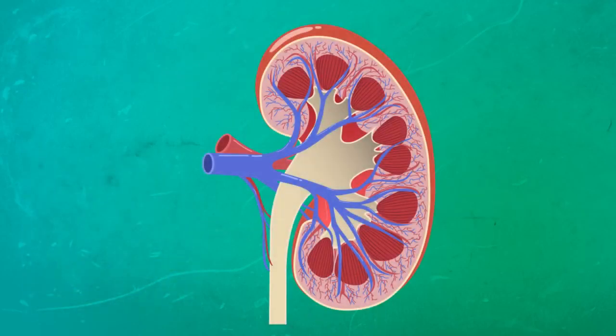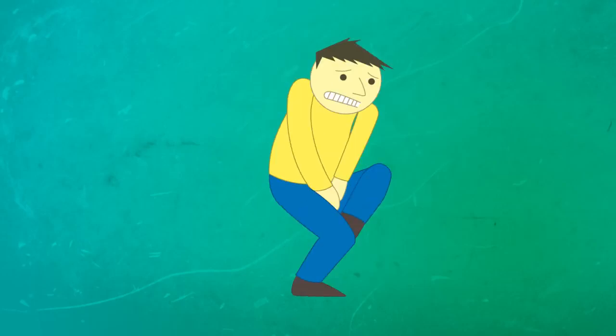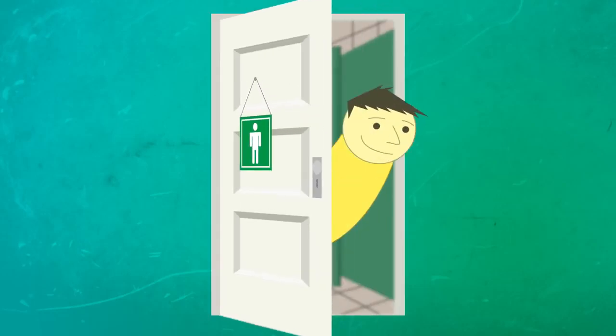Then it flows out of the kidney in the ureter down to the bladder where it's stored until the person gets that urge, you know the urge when you need to go, and then it's released out of the urethra. Ah, that feels better.